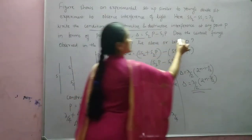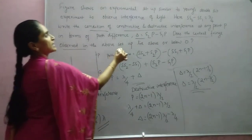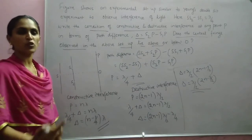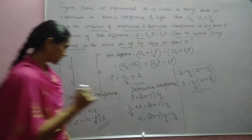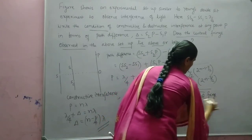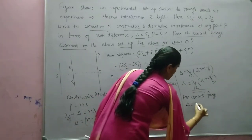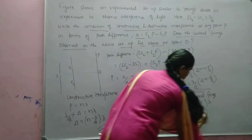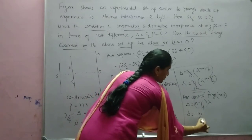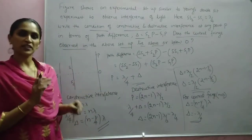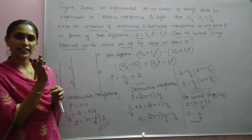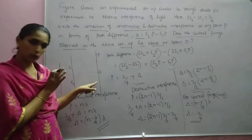For the second part — does the central fringe lie above or below O? The central fringe corresponds to n = 0. Substituting n = 0 in the constructive condition: delta = (0 − 1/4)·lambda = −lambda/4. The negative sign shows that the central fringe is shifted lambda/4 downwards, i.e., it lies below O.